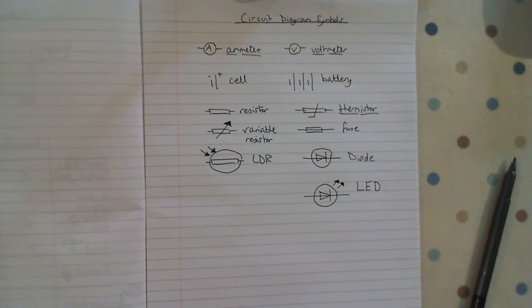Those are the most common circuit symbols that people get confused with or forget. Key thing to remember is resistors are rectangles, diodes are triangles.